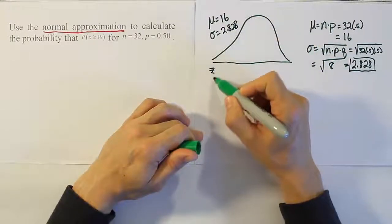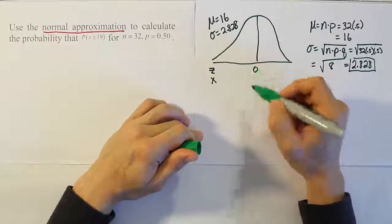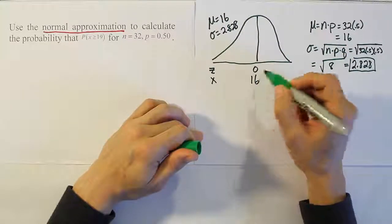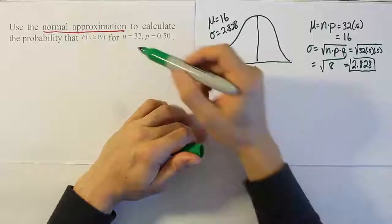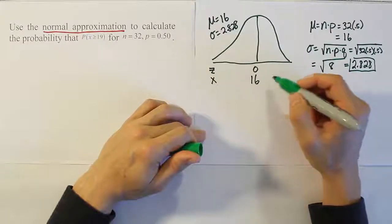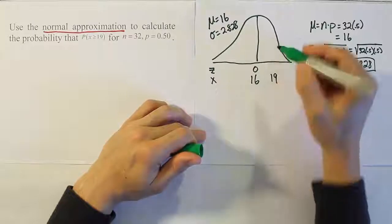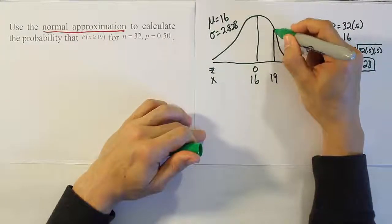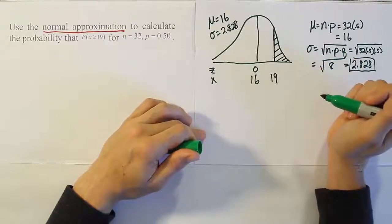Label your z axis and x axis putting the means on the curve. The z axis mean is 0, the x axis mean here will be 16. X is the number of successes out of 32 trials. X is greater than or equal to 19, so let's put 19 on the right hand side of 16 and shade the tail to the right.